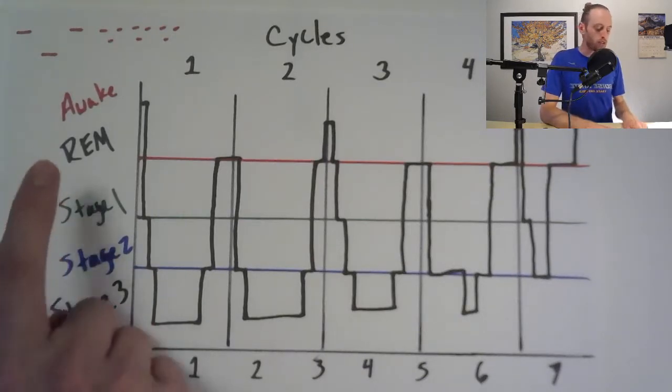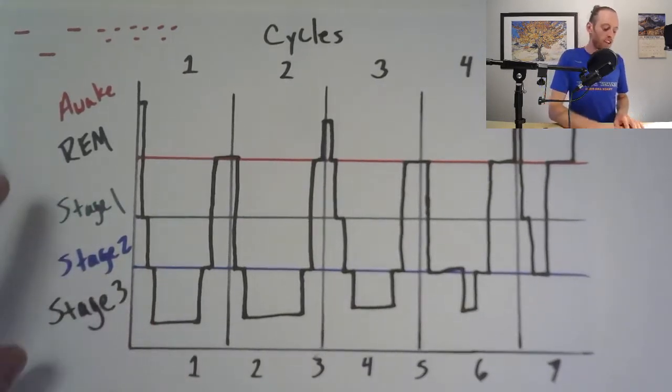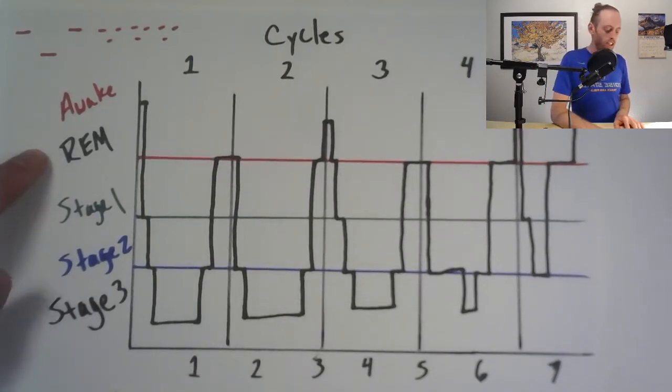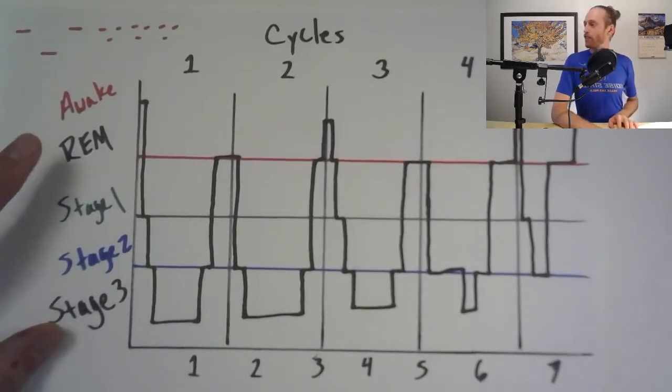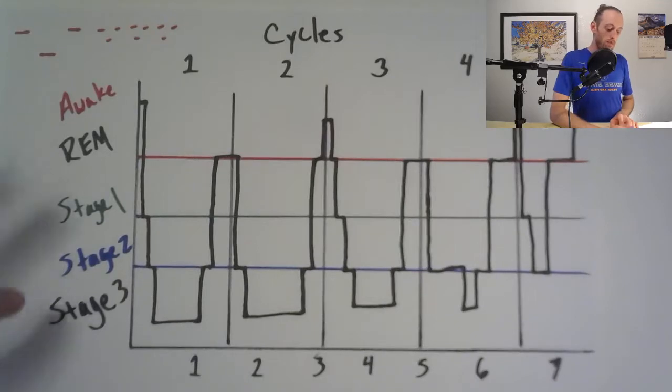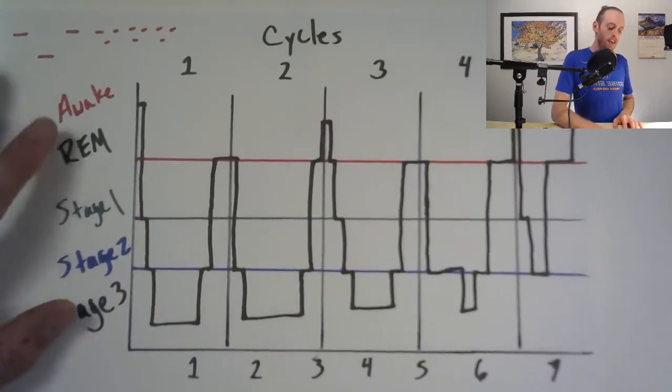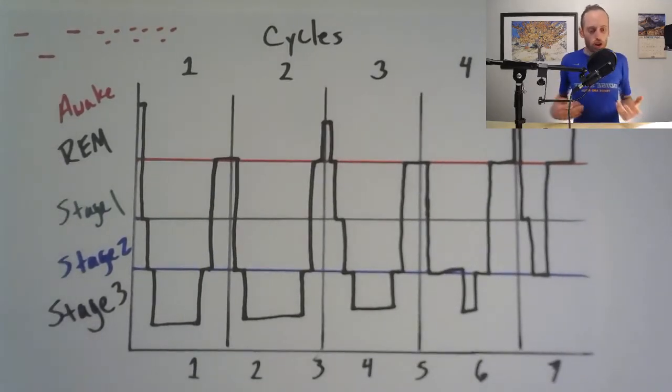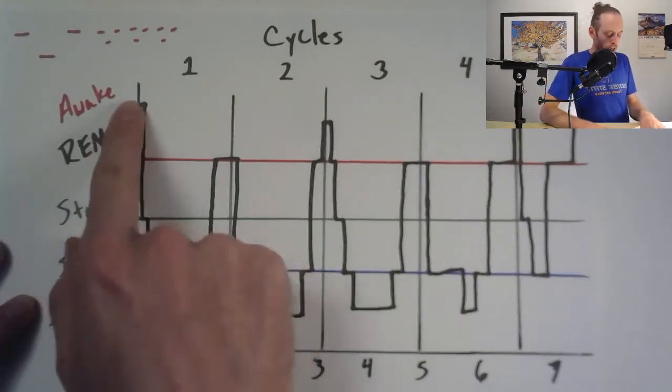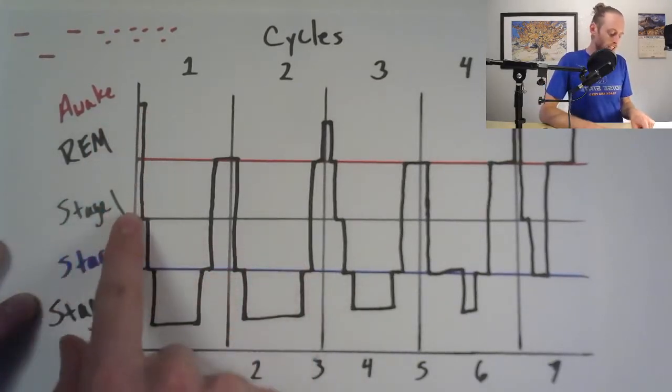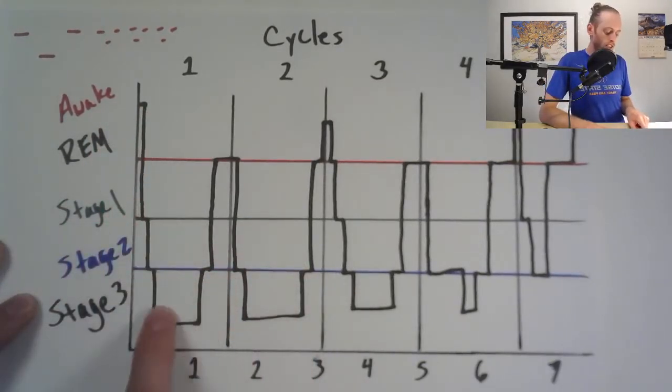The reason why I have REM up top is because the brain waves during REM sleep seem to resemble being awake more than being asleep. When you're going to bed, what happens is you're awake, and then you dive right down in and you hit your stage three sleep fairly quickly.